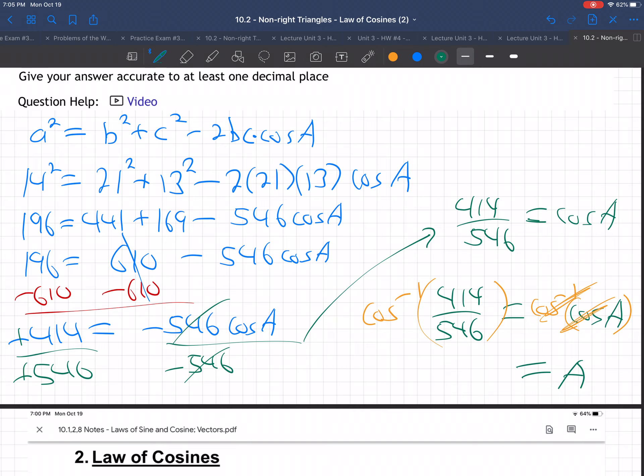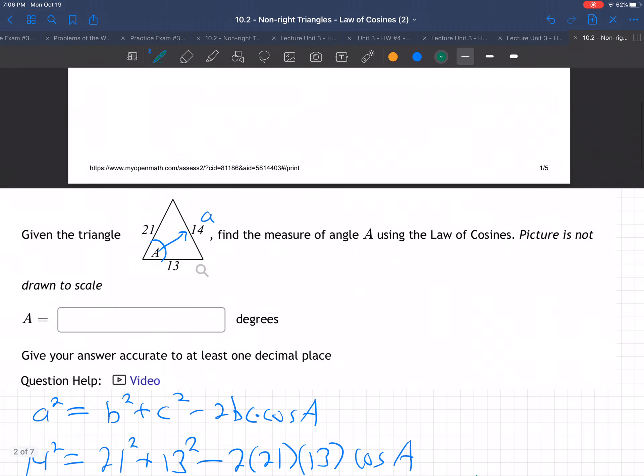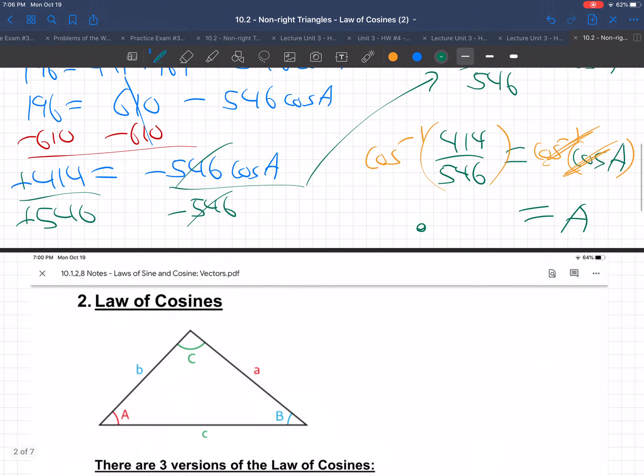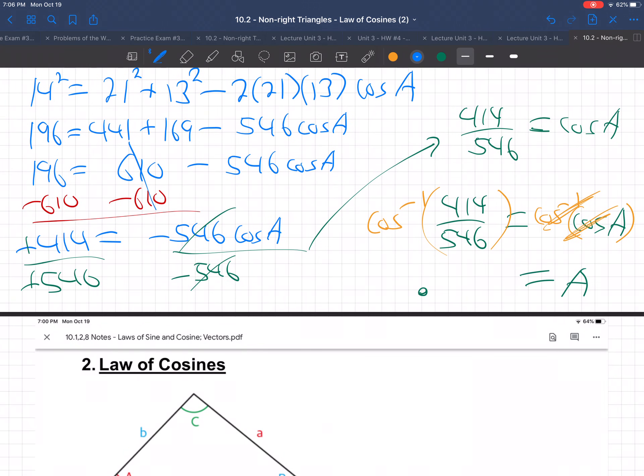Now, on the left side, use your calculator. Cosine inverse of 414 divided by 546. I'm getting point. Oh, you've got to make sure you're in the right mode. I was in the wrong mode. You've got to be in degree, because they want these angles in degrees. Yeah, degrees. So I just accidentally did the wrong mode, so that's why I got a decimal. So make sure you're in degree mode. I'm going to do it again. Now, in the right mode. So, let's see.